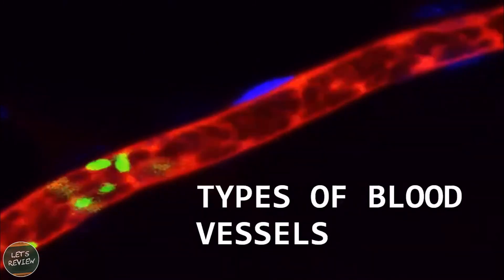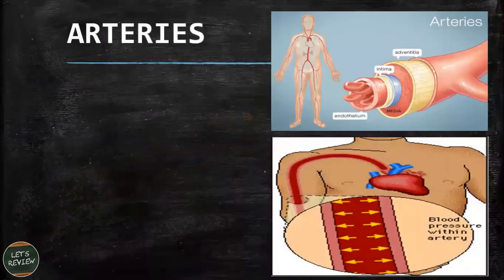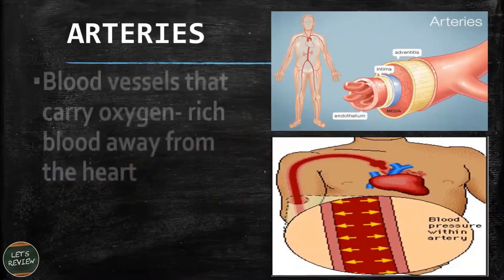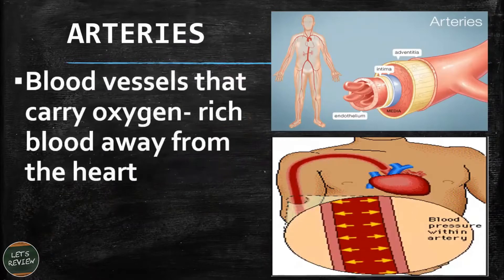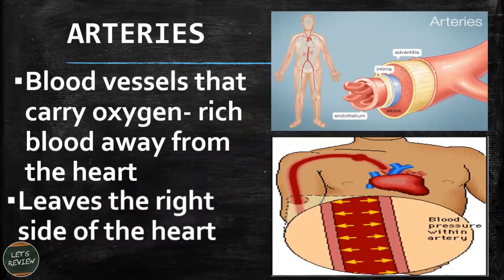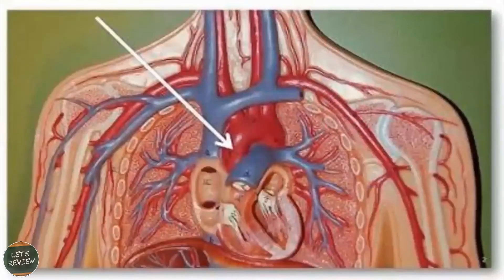Now let's see the different types of blood vessels. First, arteries are blood vessels that carry oxygen-rich blood away from the heart. As you can see in the picture showing where the artery is, it receives oxygenated blood and brings it away from the heart.